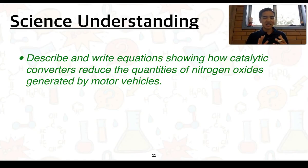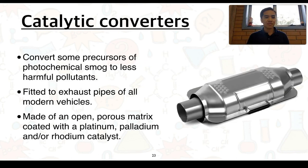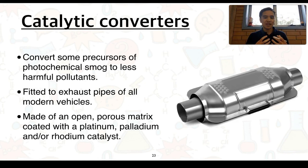The last science understanding is to be able to describe and write equations showing how catalytic converters reduce the quantities of nitrogen oxides generated by motor vehicles. Catalytic converters aim to help reduce the concentration of some of these pollutants — they can convert some of these precursors of photochemical smog to less harmful pollutants.